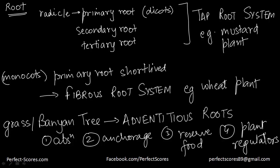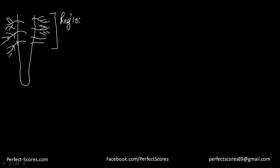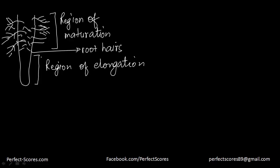The next thing we need to cover is the regions of a root. Let me draw a little diagram here. We have the main root with secondary and tertiary roots coming out from it. The uppermost portion is known as the region of maturation. The extra hairs you can see on this are known as root hairs. Below that is the region of elongation, because this is the area that keeps on growing — it is just below the mature area where the root hairs emerge.